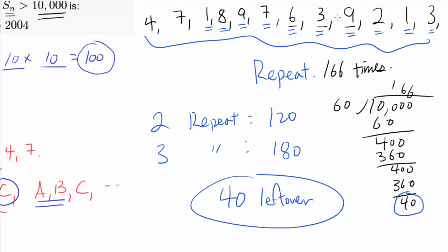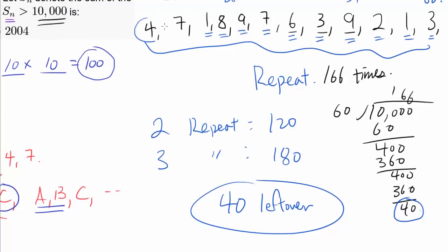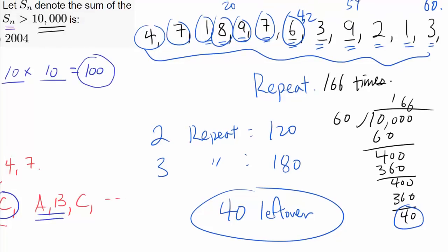We have to continue this repeating part to get extra 40 into our sum, and that's not hard to do. 4 plus 7 is 11, 12, 20, 29, 36, 42. So here it is. So we're going to stop at 6 to get another 42 into our sum.